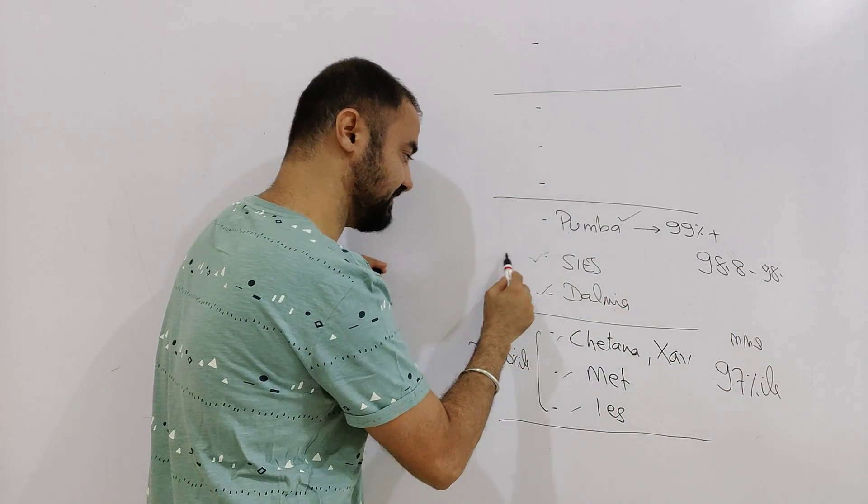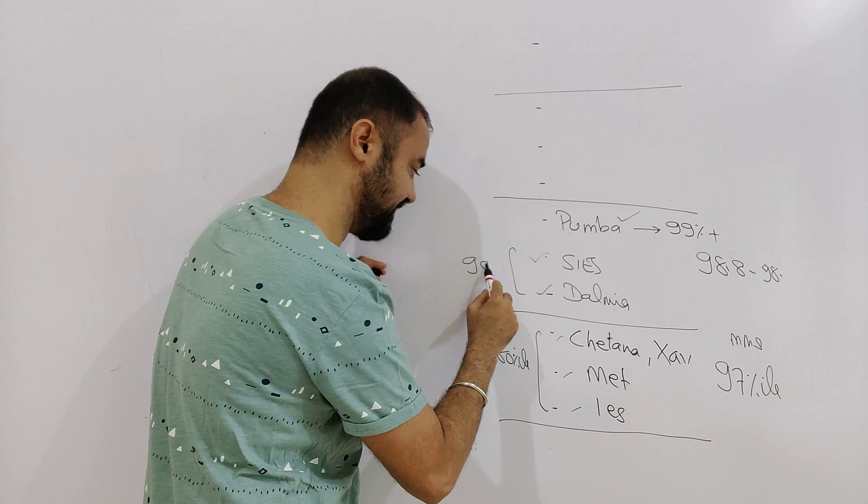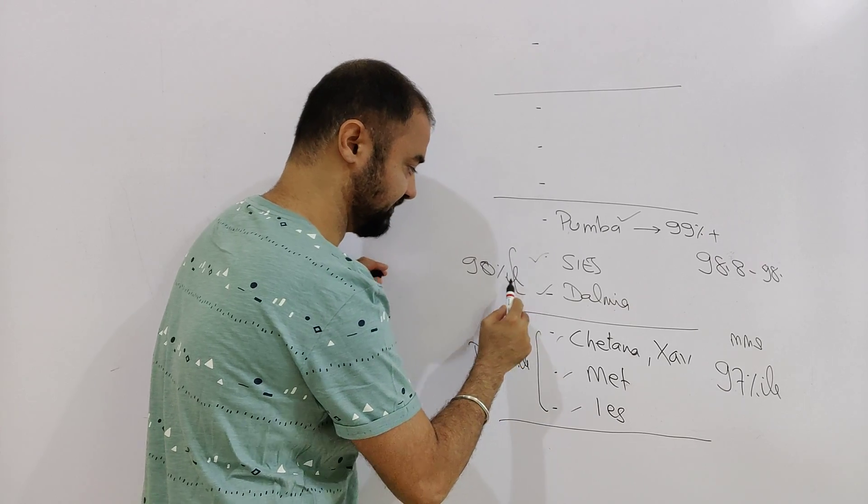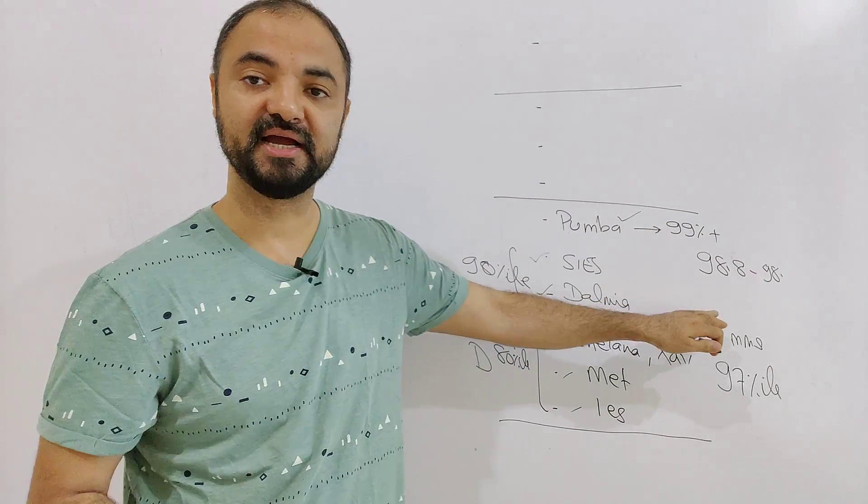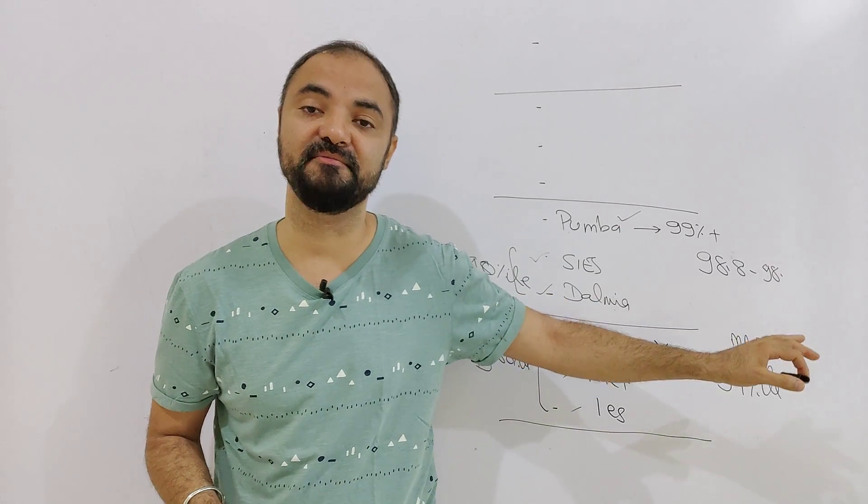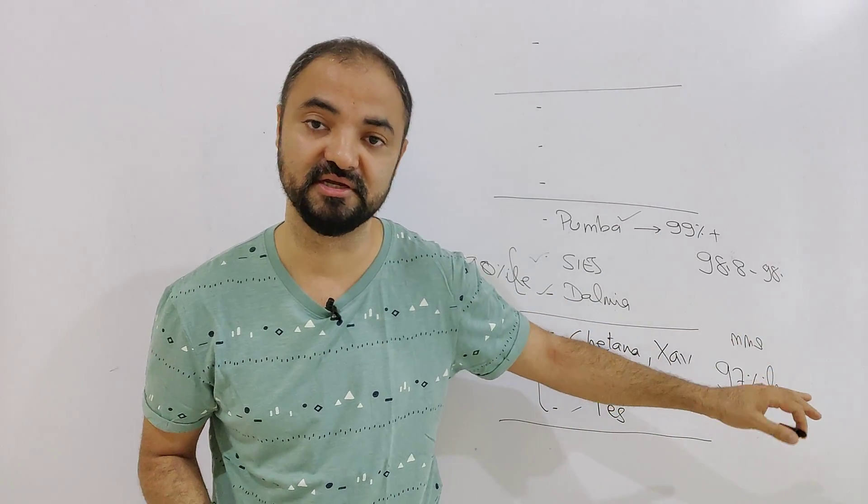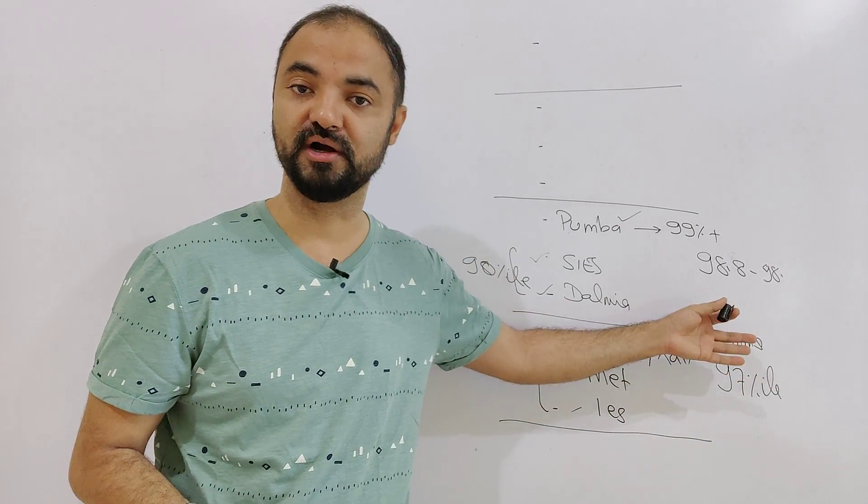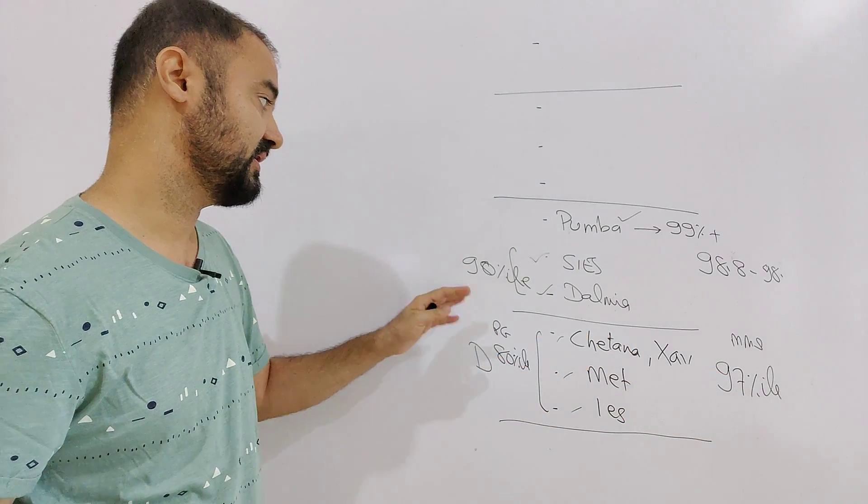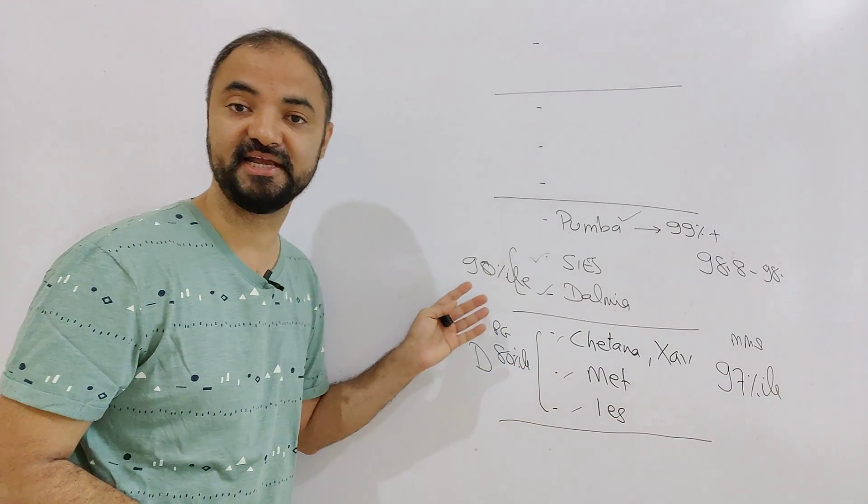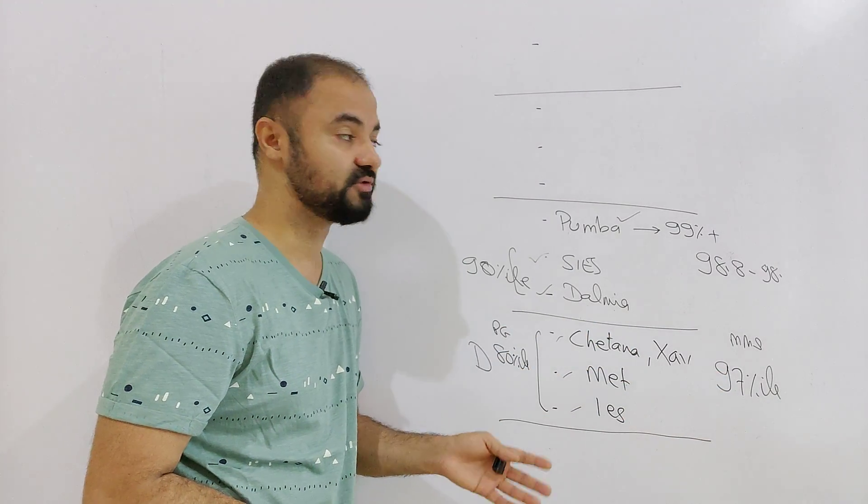Pumba obviously will be 99 percentile plus this year as well. And SIS, Dalmia have the PGDM as well. To convert their PGDM, 90 percentile is good enough. Why the cutoff is high in MBA? That's not because MBA has a very good program compared to that. MBA has no GDPI. It's a direct admission. So that's why the cutoff is high. And SIS, Dalmia, because of the PGDM, you're invited for the GDPI call and all. So cutoffs are really high.